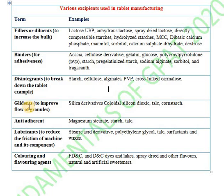Next are glidants. Glidants are used to improve the flow of granules from the hopper to the die cavity. Examples of glidants include silica derivatives like colloidal silicon dioxide, talc, and corn starch.